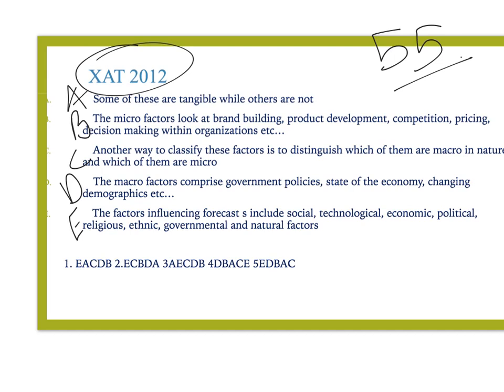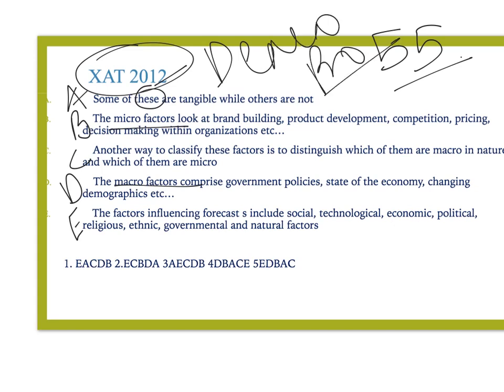Okay, now let's try and do this. If I look at the question, I see it's talking about some macro factors and some micro factors. Now let's look at your options very quickly. Look at the first option — 'some of these' — 'these' is basically a demonstrative pronoun. We're not going to use this pronoun because 'some of these' means it's a referencing pronoun — it's talking about something previously mentioned. This is definitely referring to something, and that's the reason A cannot be the opening.